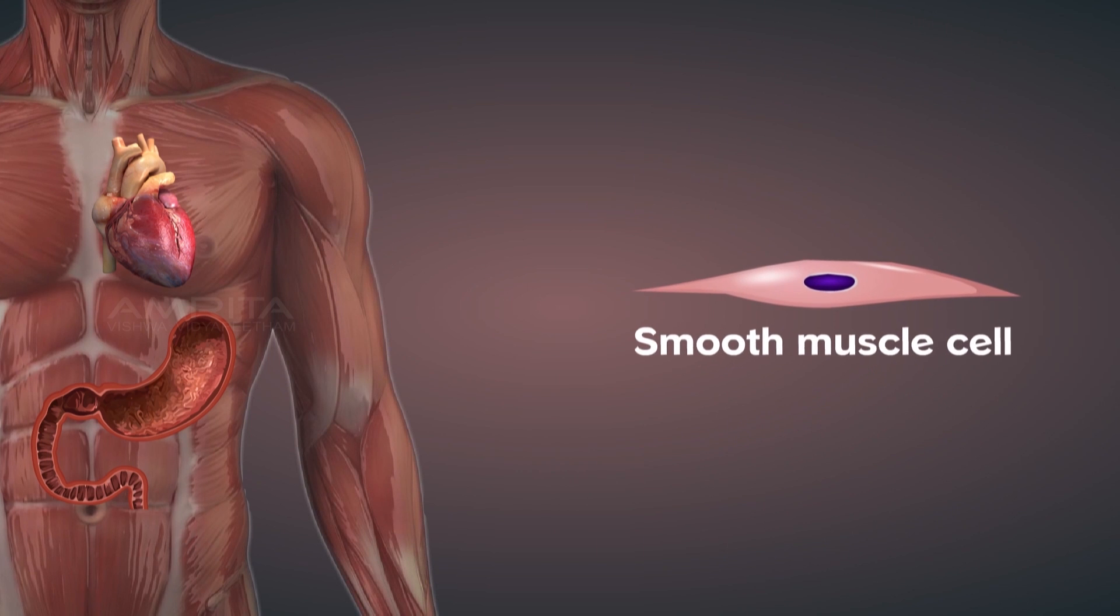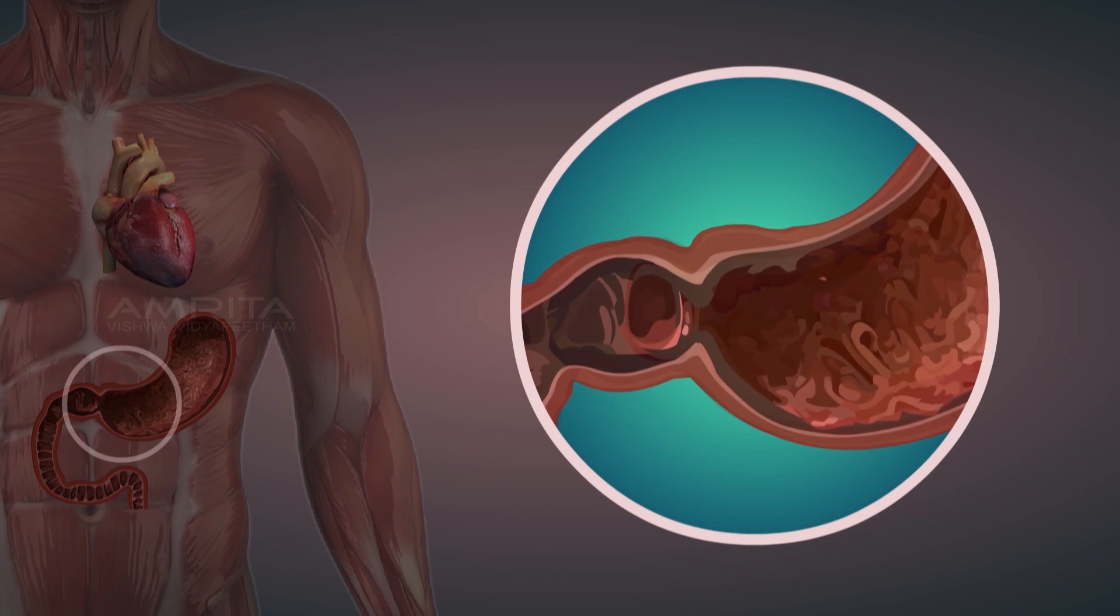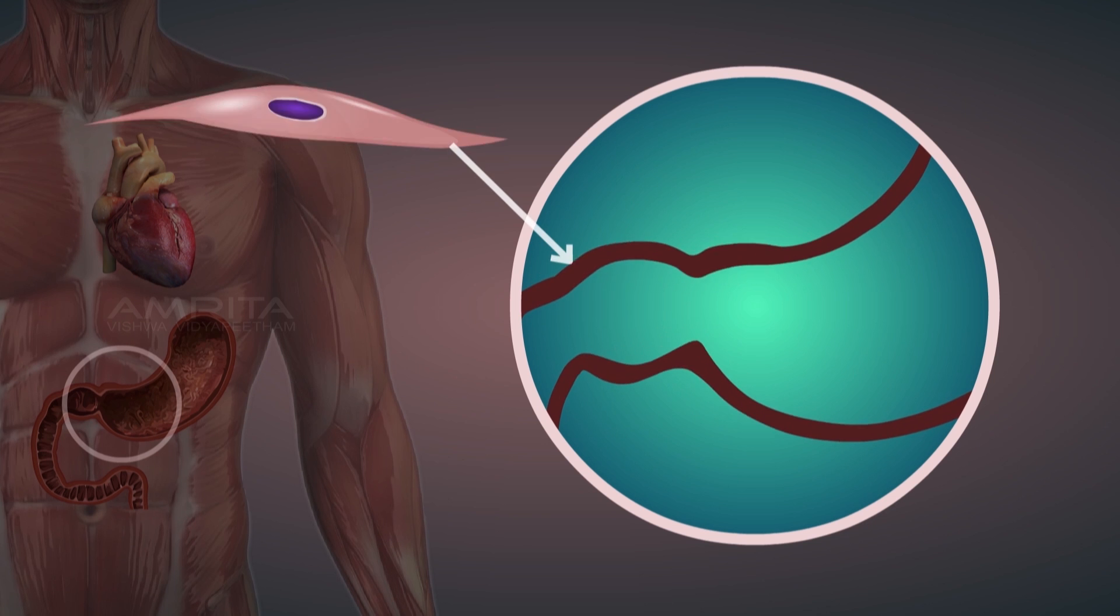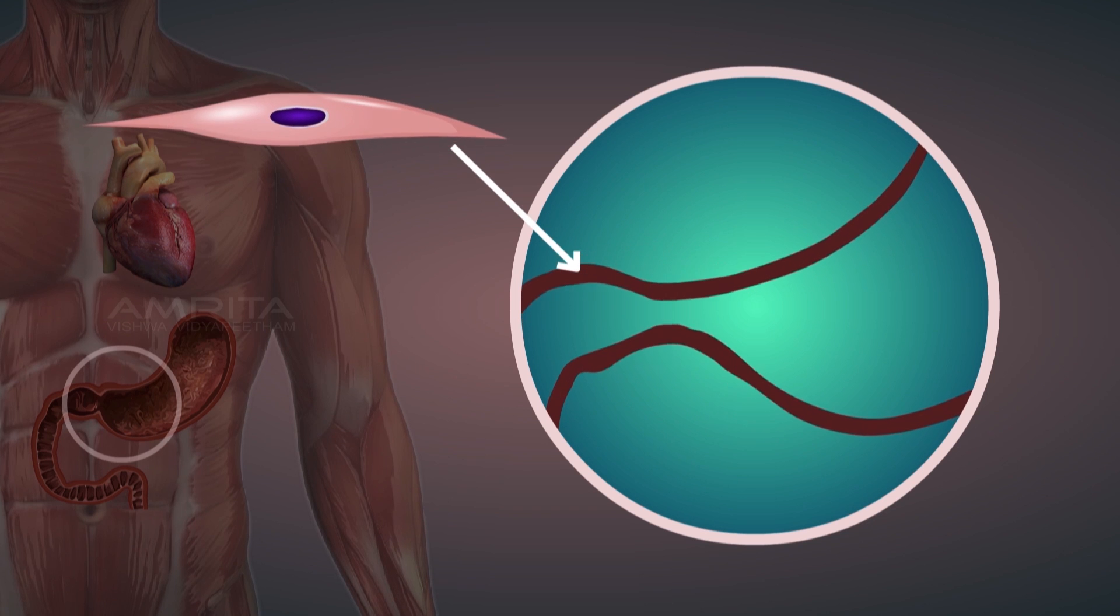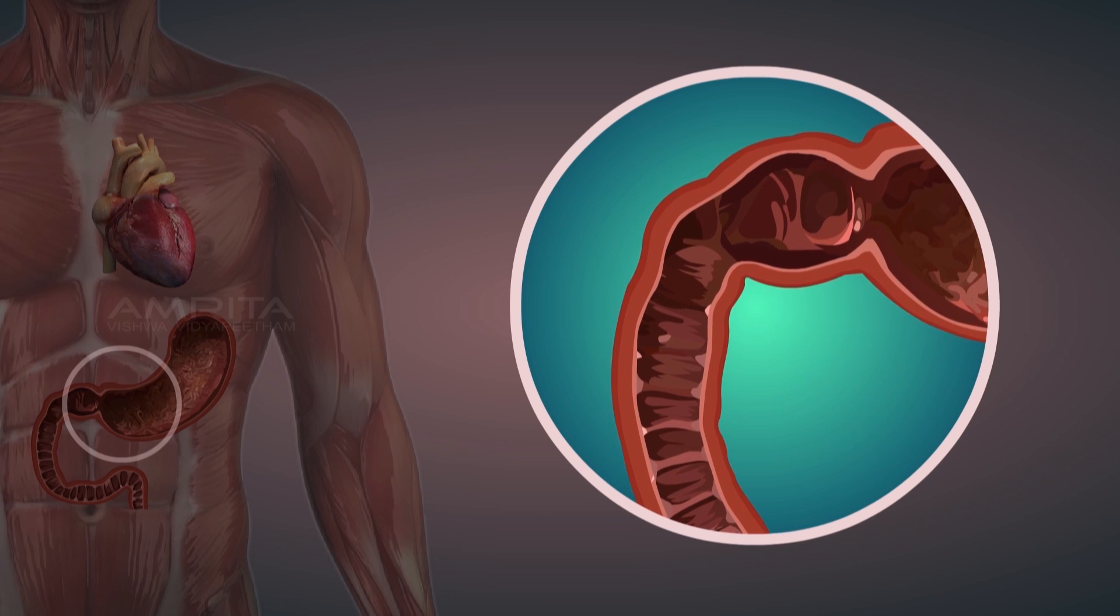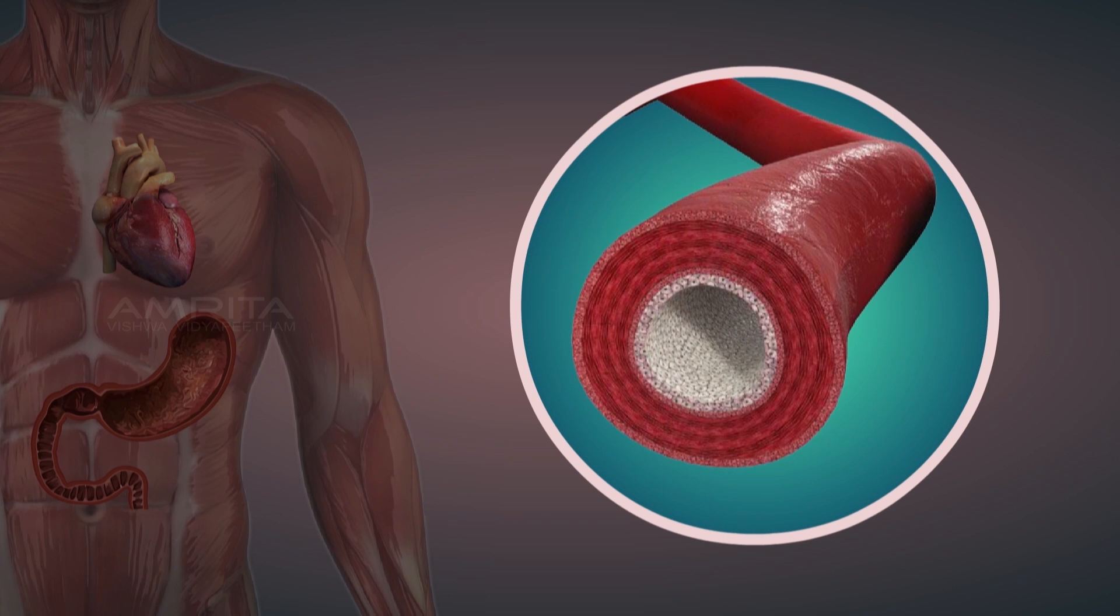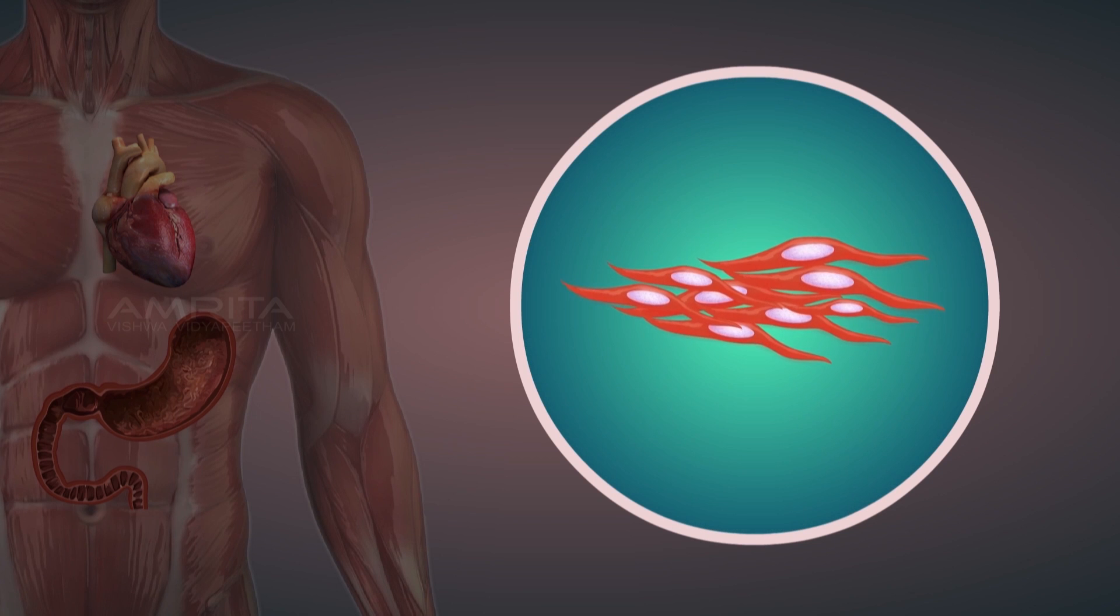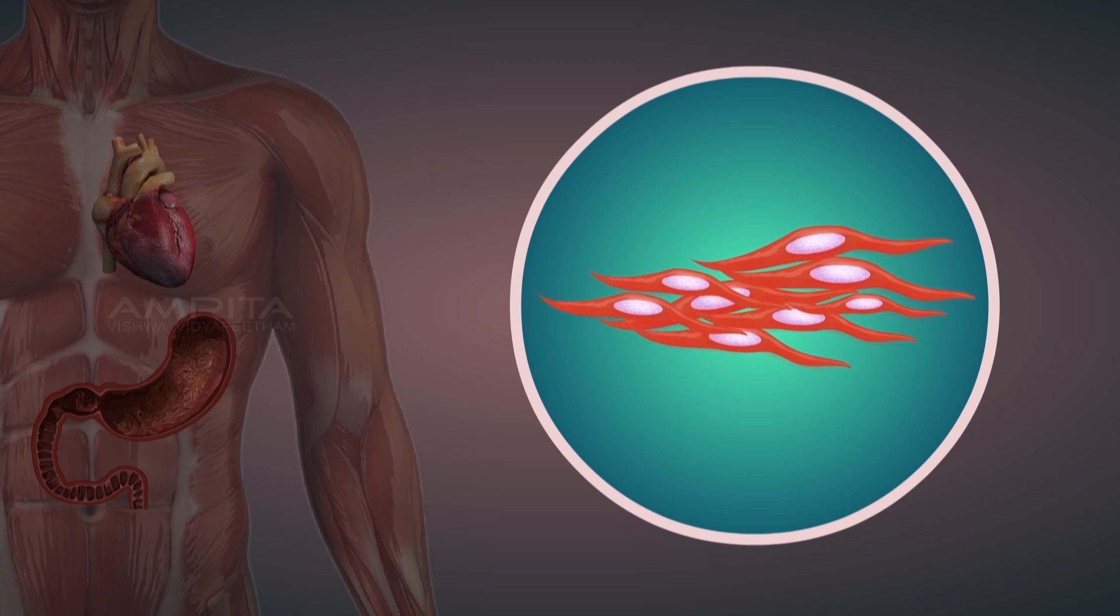Smooth muscle cells provide involuntary movements such as the contraction of walls. They line the walls of the hollow structures of the body. Smooth muscle cells are found in the intestines and blood vessels. They are spindle-shaped, flat, pointed at both the ends and broad at the middle.